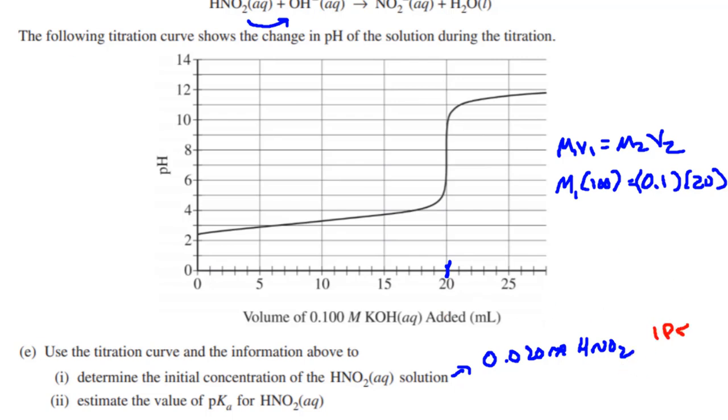Now take a look at Part E2. It says estimate the value of the pKa. How do we know what the pKa is? Halfway to the equivalence point, the pH is equal to the pKa. That is when we are buffered. If you take a look at this and estimate it, I estimate it about 3.4. You might estimate a different value—that's okay. That's all worth one point as long as you're close.